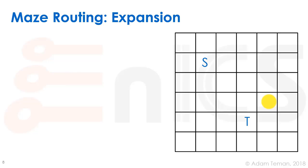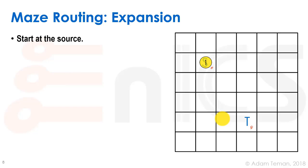The basic idea for maze routing is a three-step algorithm: expand, backtrace, and cleanup. In the expand step, we have our grid with a source and a target, and we want to find the shortest possible path from source to target. Assumptions: only one net per grid block, it costs one step to move from one grid block to another, and we must use Manhattan routing — horizontal and vertical only.